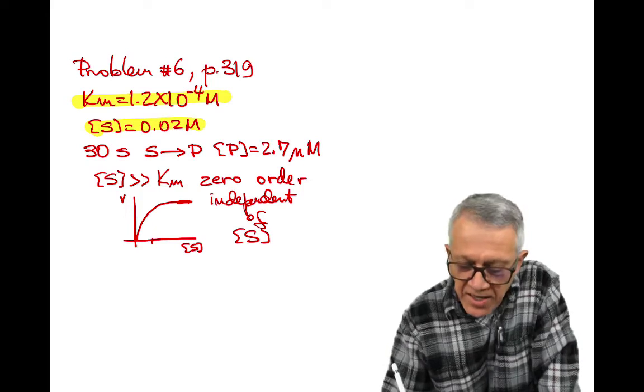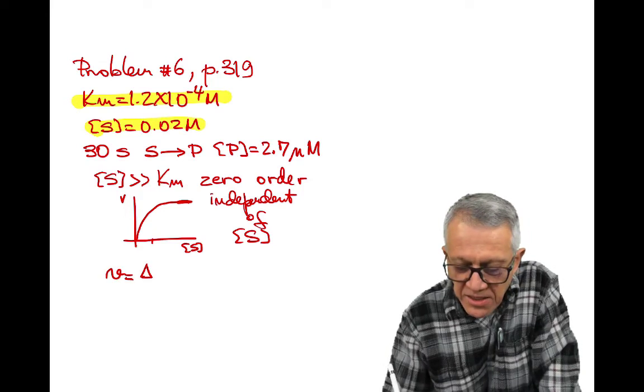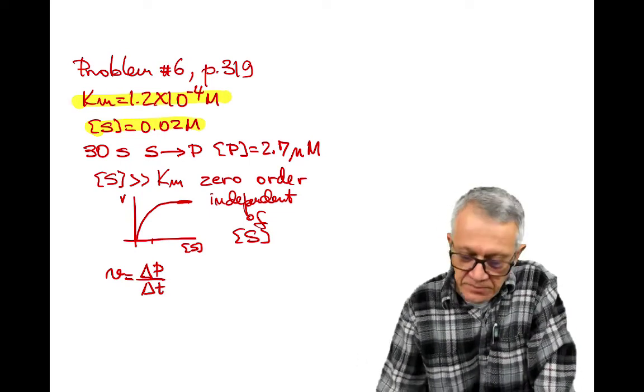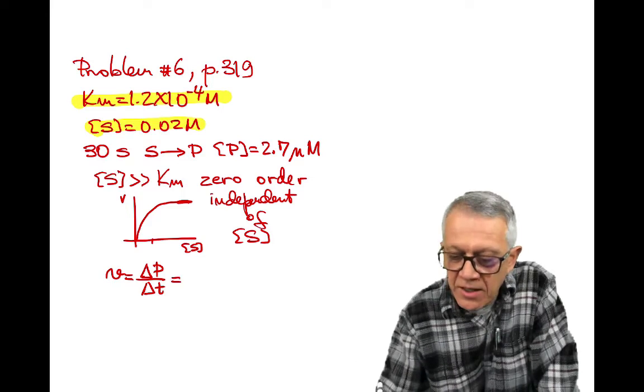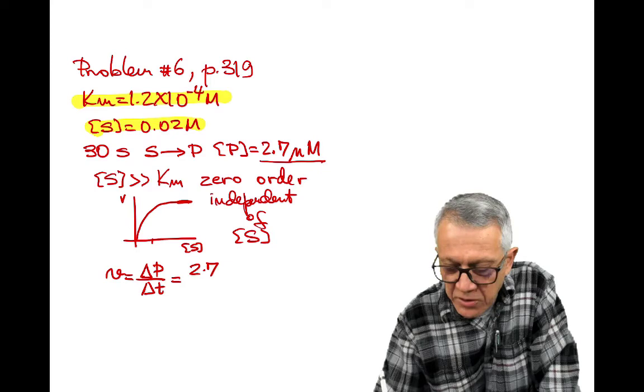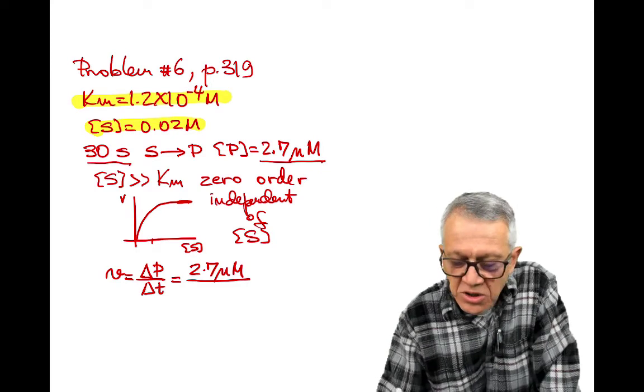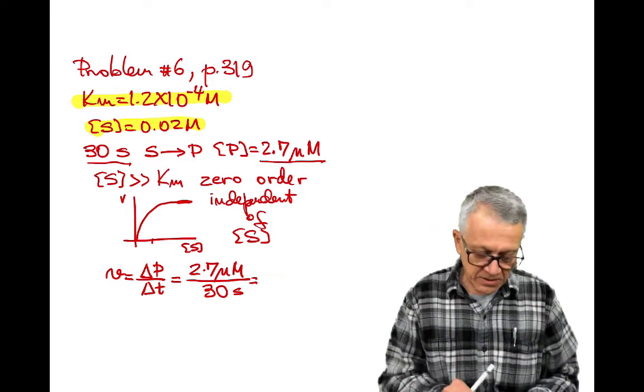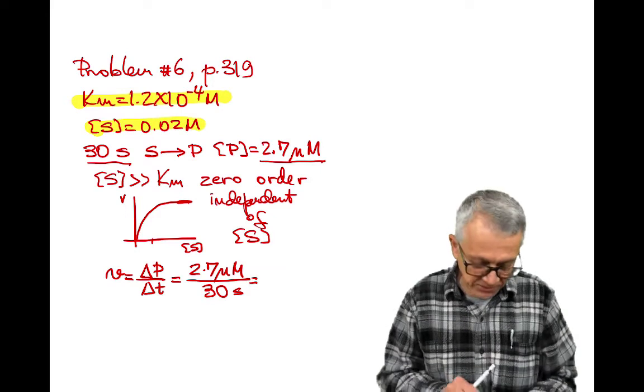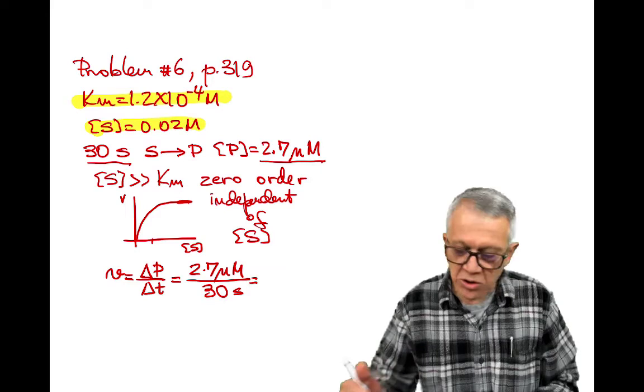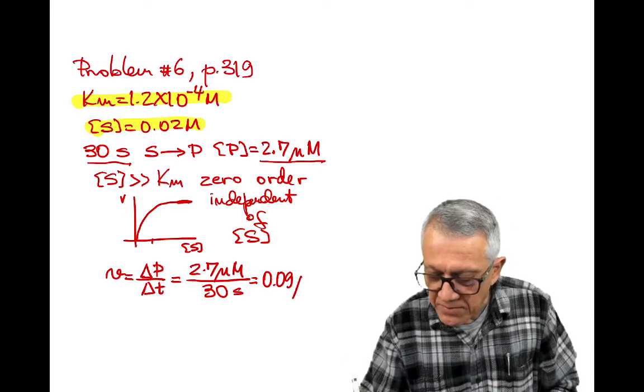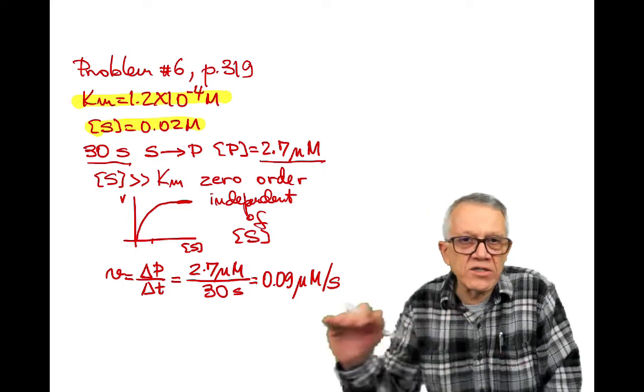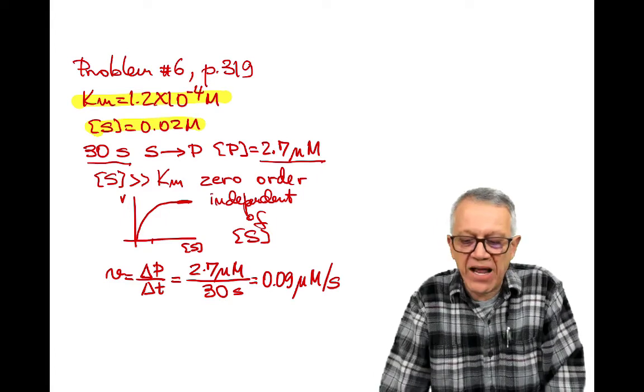So in that particular case, the velocity of the reaction is going to be basically how much product was formed in a certain interval of time. So we have the formation of the product, 2.7 micromolar, and this happens within 30 seconds. Divide by 30 seconds, this will give us the velocity of this reaction. It's going to be 0.09 micromolar per second.